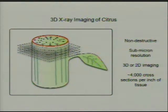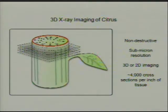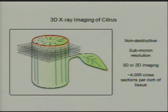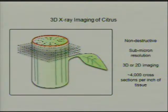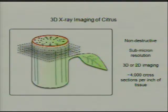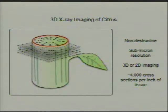One of the visualization tools I've been developing over the past few years is called high-resolution X-ray computed tomography — basically a CAT scan based on the same principles as a medical CAT scan, but at a much smaller scale. We can take a live plant or an excised piece of tissue, put it in this instrument, and look at the organization of cells in three dimensions. It's sub-micron resolution, we can do 2D or 3D imaging, and in about an inch of tissue we can get 4,000 cross-sections — which would be very difficult with traditional light microscopy.